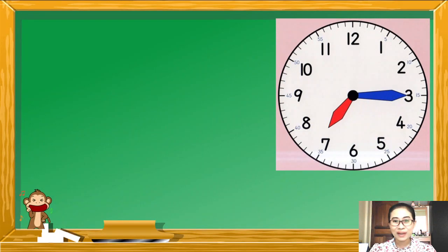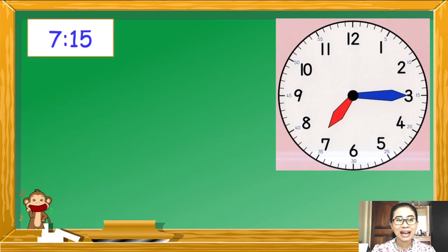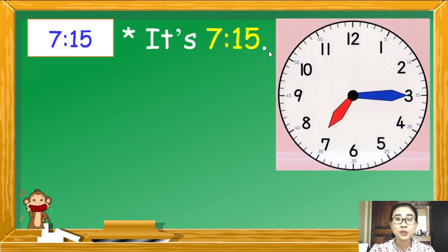What time is this? เวลาเท่าไหร่ ใช้วิธีที่คุณครูเคยสอน ดูที่เข็มสั้นก่อน เข็มสั้นชี้เลข 7 ต่อไปเข็มยาวชี้เลข 3 เป็น 15 นาที ดังนั้นเขียนเป็นตัวเลขได้คือ 7.15 Let's see how we do this on the screen. It is 7.15.